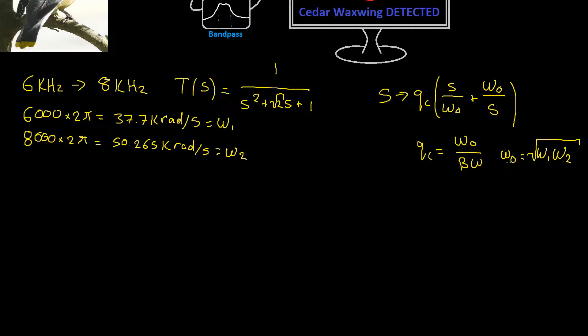Okay so now that we have omega 1 and omega 2 we can calculate our omega 0. That's simply the square root of 50.265k times by 37.7k and that's equal to 43.531k radians per second. And that's equal to omega 0.